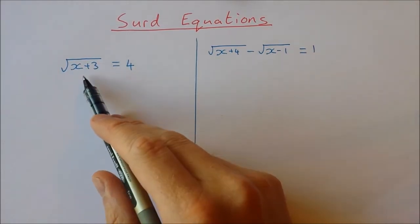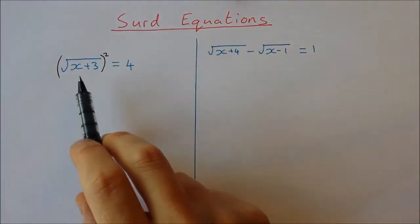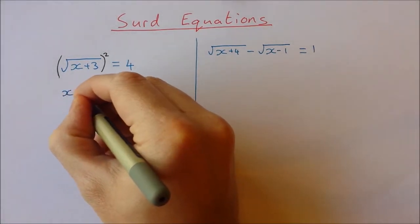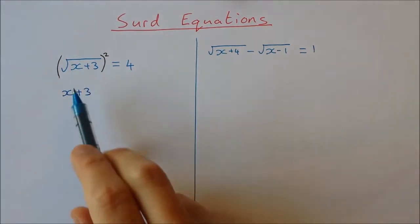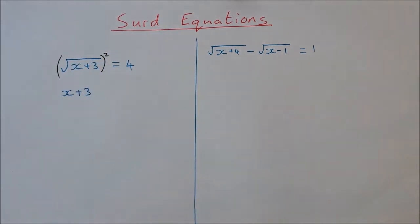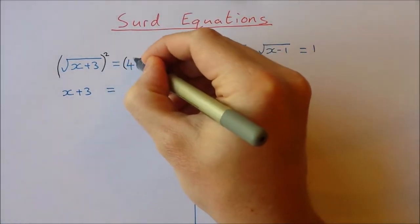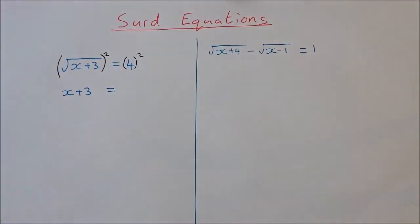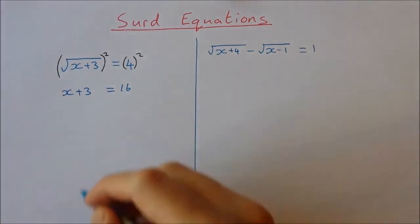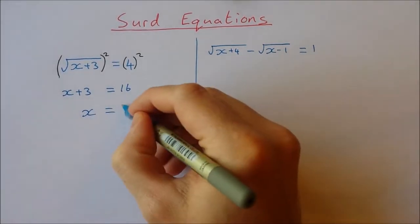So if I go ahead and square that, I'll be left with x plus 3. The square root of x plus 3 squared is x plus 3. But because I'm dealing with equations, if I square one side I have to square the other side, so I end up getting x plus 3 equals 16. That means x is equal to 16 minus 3, which is 13.